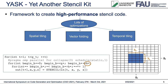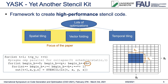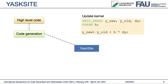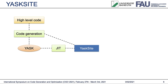For this paper, we will stick to spatial and vector folding optimization to demonstrate this approach. In order to incorporate this analytical tuning idea into YASK, we developed YASKsite. The following slide shows the basic working principle of YASKsite. Input to YASKsite is a high-level code of the form shown on the right. YASKsite's code generation tool processes this high-level code to a C++ stencil file compatible with YASK. This code is further compiled by YASK and linked to YASKsite. All this happens at runtime and is handled by the just-in-time compilation feature of YASKsite. Optionally, these builds can be cached to avoid compilation overhead when the same stencil is called a second time.